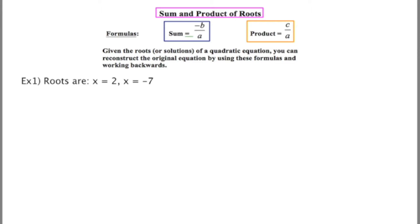Example 1, the roots are x equals 2 and x equals negative 7. To use these formulas, the first thing I need to do is construct the sum, which means literally adding those two roots together. 2 plus negative 7 gives us a sum of negative 5. When I express the sum I write it as a fraction because the sum formula is a fraction and I want things to line up. That formula is negative b over a.